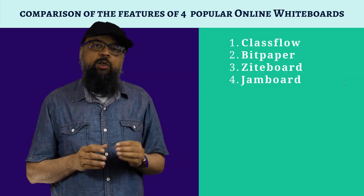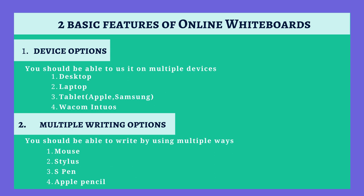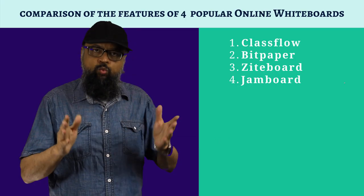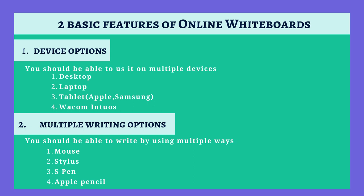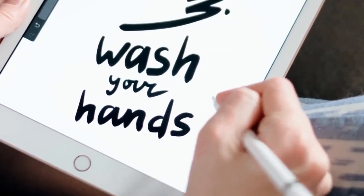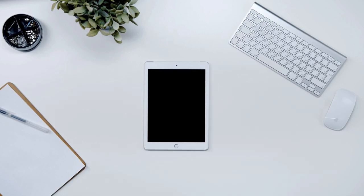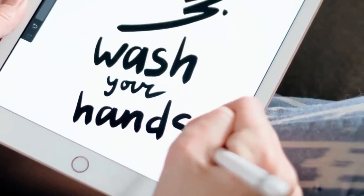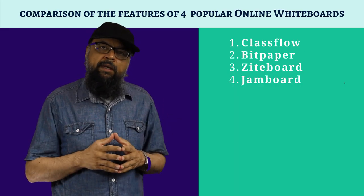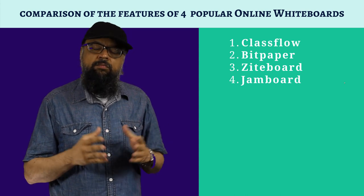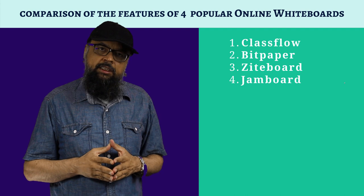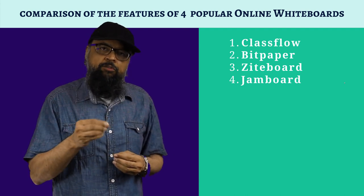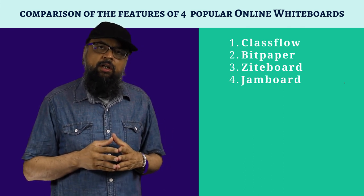The second basic feature is that you must be able to use the whiteboard in different ways. You should be able to draw using your mouse, which is the worst case scenario because it's not easy to draw with a mouse. The application should also allow you to use a stylus, Apple Pencil with your Apple devices, or S Pen with your Samsung devices. Writing on a whiteboard is very easy when you use a pencil. This is how I create my mathematics courses — for example, my algebra course on Skillshare was completely created using the Wacom Intuos tablet, because you write just like you would write on paper.